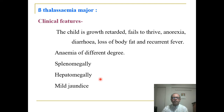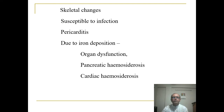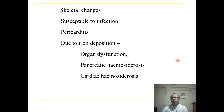There are skeletal changes, susceptibility to infections, pericarditis, and due to iron deposition, there is organ dysfunction including pancreatic and cardiac hemosiderosis. This is because patients with beta-thalassemia major receive multiple blood transfusions due to very low hemoglobin levels, leading to high iron deposition.